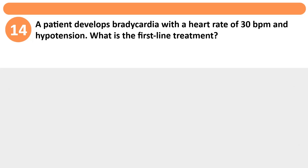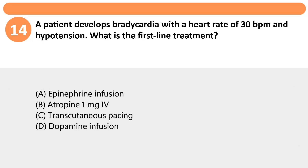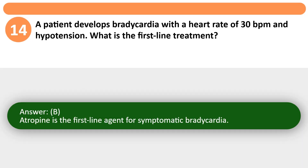A patient develops bradycardia with a heart rate of 30 BPM and hypotension. What is the first-line treatment? A. Epinephrine infusion. B. Atropine 1 mg IV. C. Transcutaneous pacing. D. Dopamine infusion. Answer: B. Atropine is the first-line agent for symptomatic bradycardia.